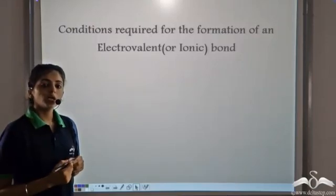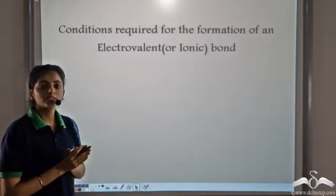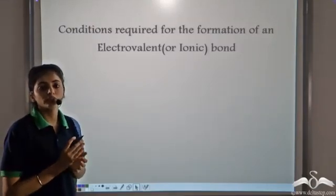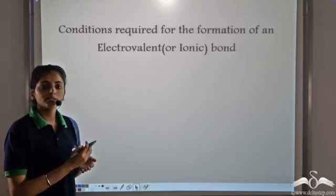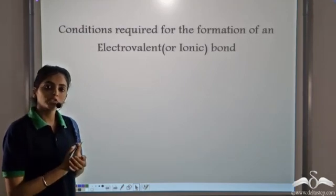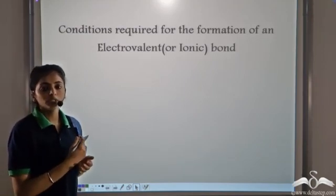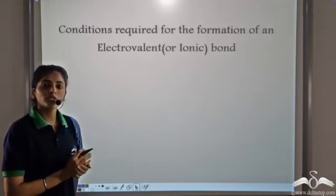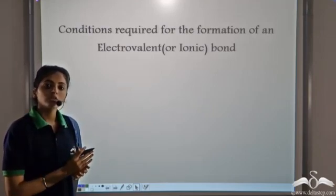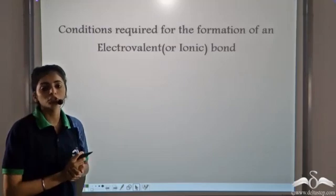We know an ionic bond requires the transfer of electrons. One atom loses electrons and the other atom gains electrons. Now let's look at some of the conditions which are required for the formation of an ionic bond.